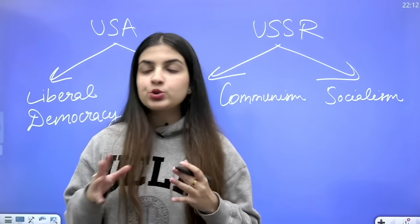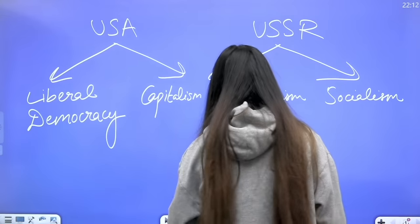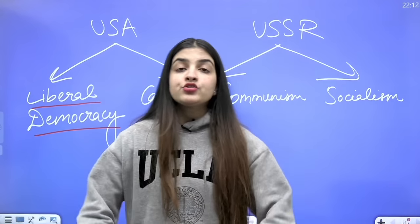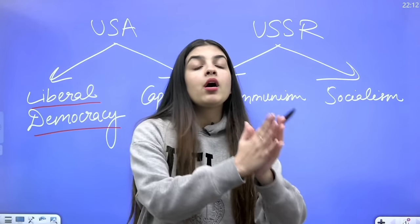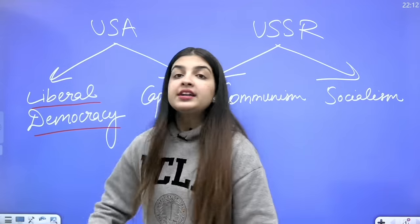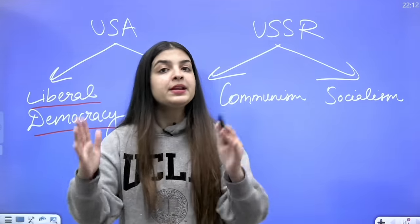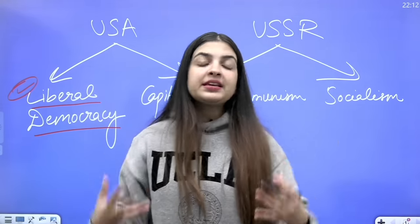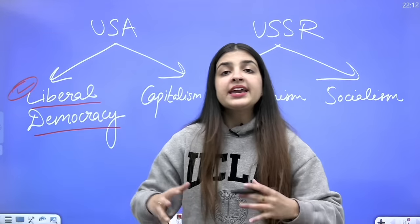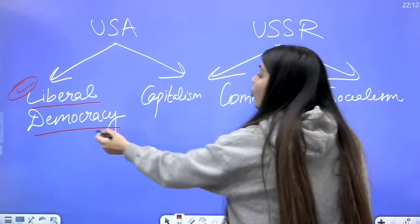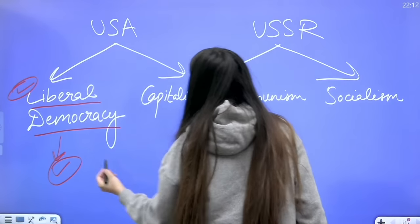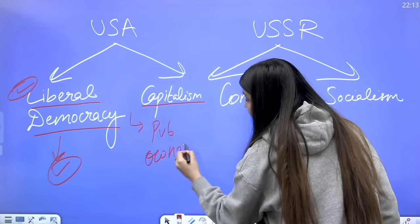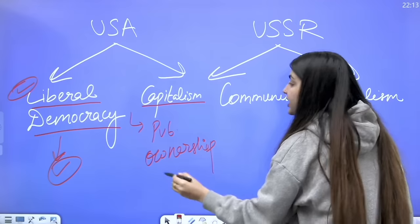Liberal democracy means a government of the people, for the people, by the people — where ultimate authority lies with the citizens. 'Liberal' means freedom — freedom of speech, right to life and personal liberty, and fundamental rights. Capitalism means private ownership of resources and means of production. The government's role is negligible; market forces of demand and supply run the economy.